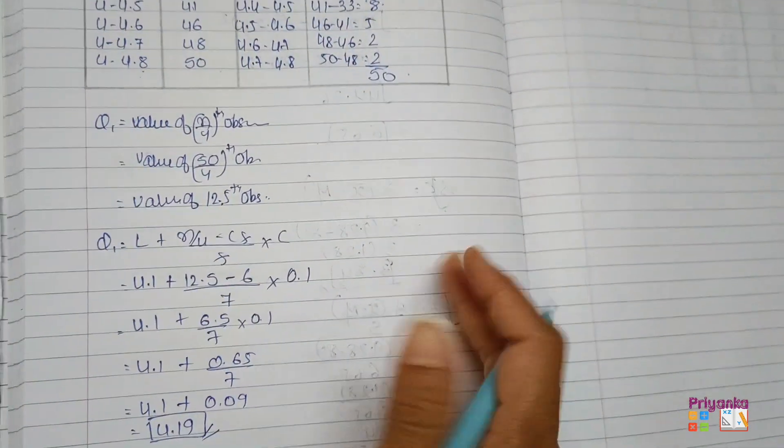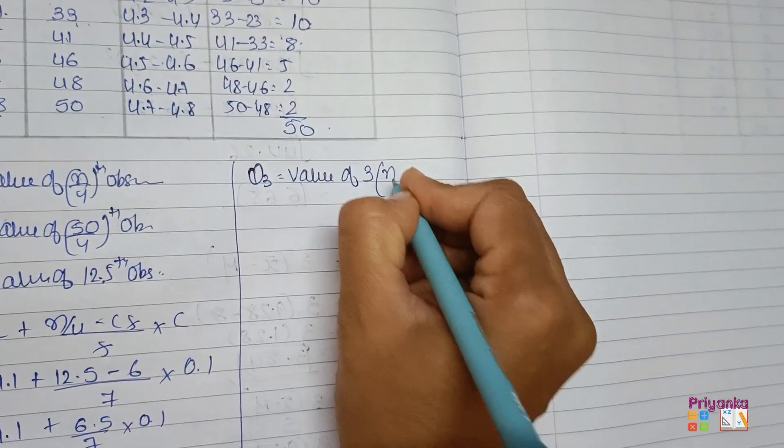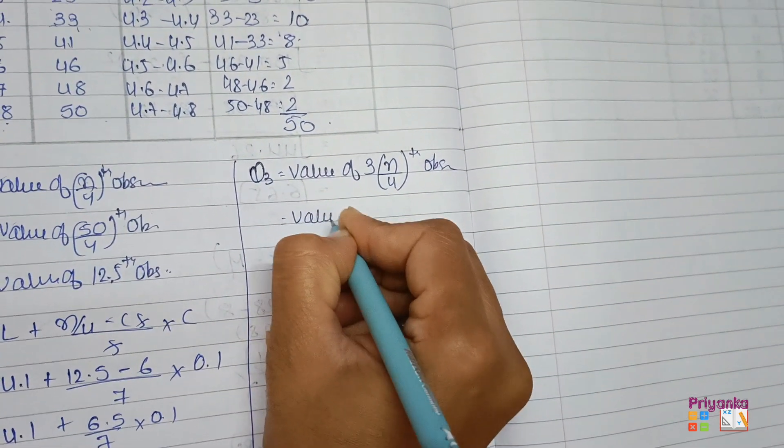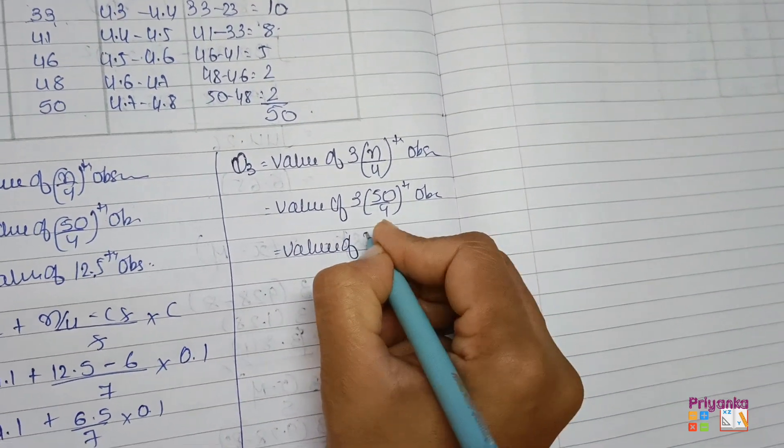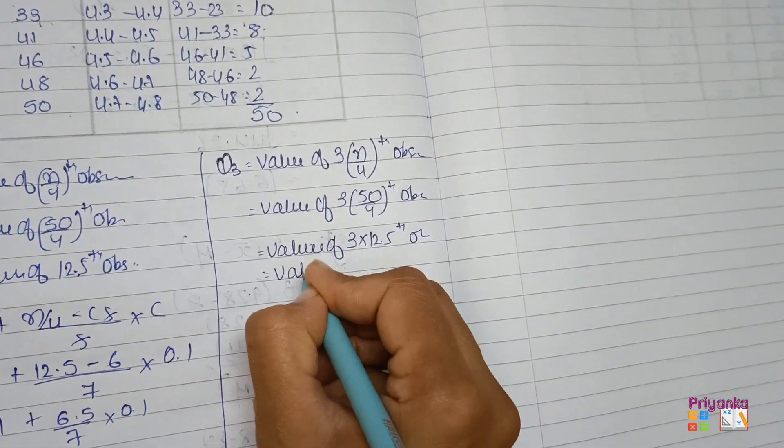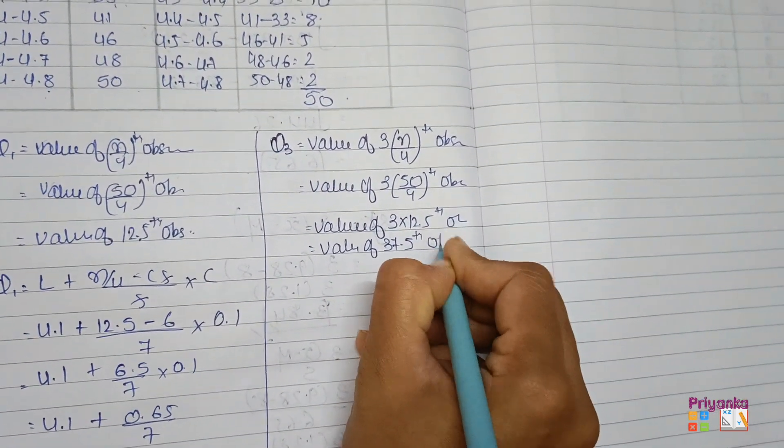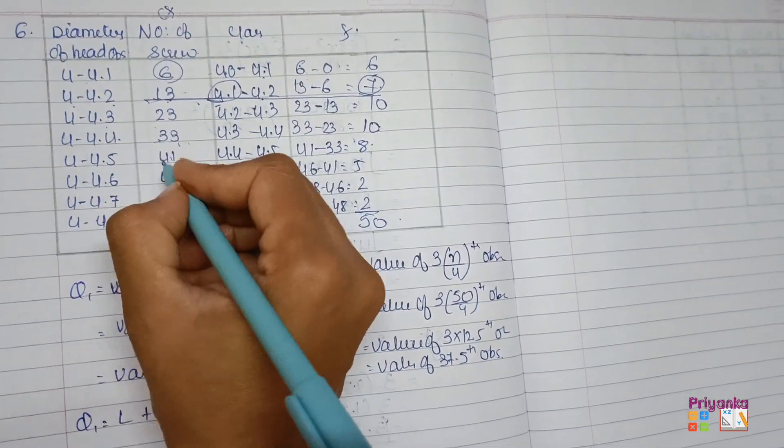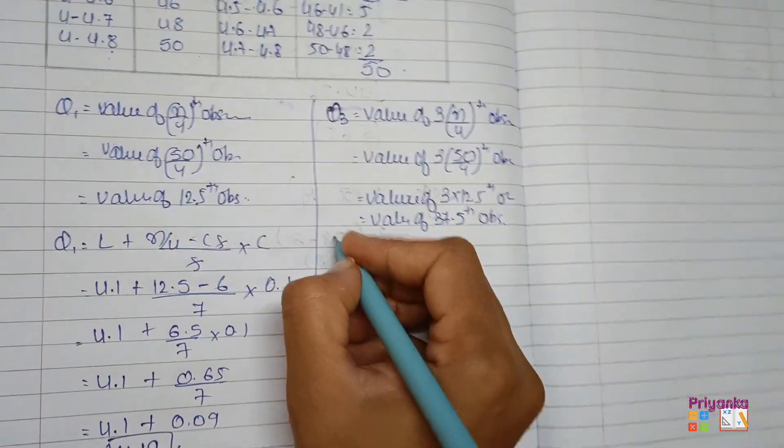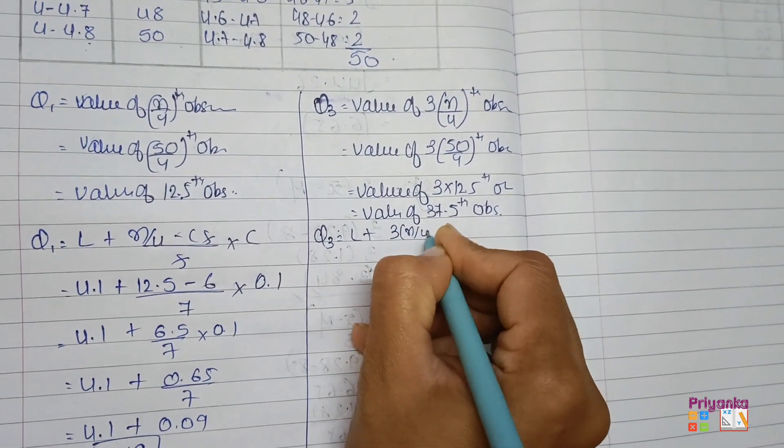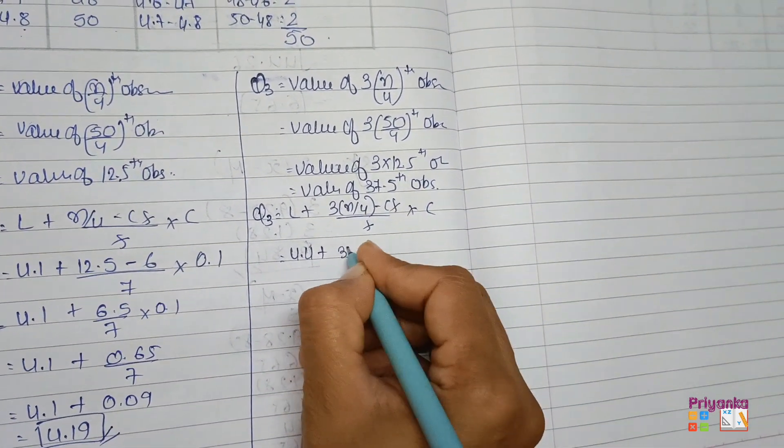Next we find out Q3, value of the same formula but just don't forget to keep 3n upon 4, the observation. 3 times 50 upon 4, and here we get the Q3 is 37.5th observation. So checking the CF, 37 is at 41. 33 will be the cumulative frequency, lower limit will be 4.4, and the frequency will be 8. 3n upon 4 minus CF upon frequency into C. Lower limit here we found 4.4, 3n upon 4 the calculation 37.5.